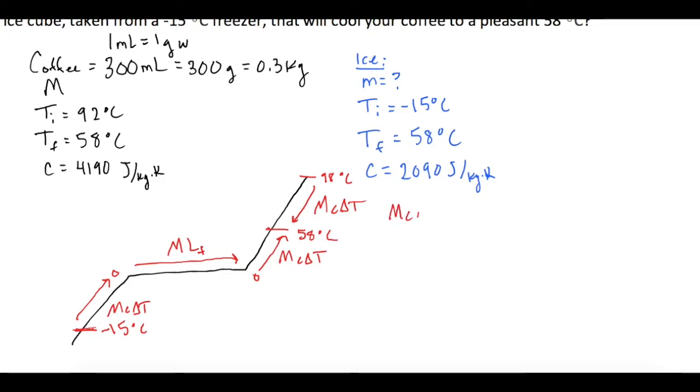So all of these are going to be added together and equal zero. So let's do that. We have M C delta T for ice plus M times the latent heat of fusion. And then we're going to add M C delta T for the water. And then the delta T for the coffee right here is going to give us a negative delta T because it's a final minus initial. So let's bring the negative from that out front to a negative M C delta T. And all of that's equal to zero.